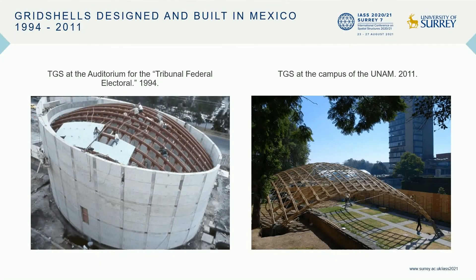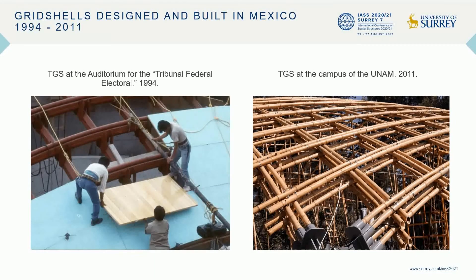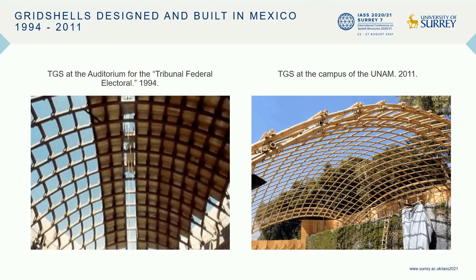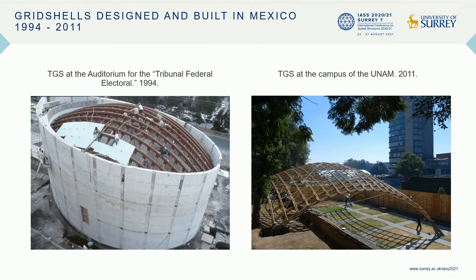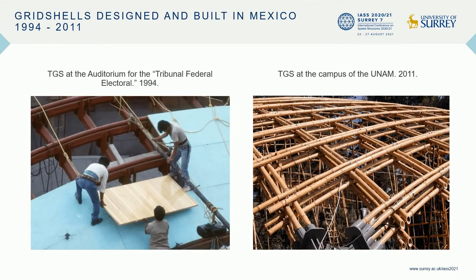On the left side, we can see the translation grid shell at the Auditorium for the Tribunal Federal Electoral, 1994. It has a covered area of 400 square meters and was built with continuous steel rods covered with timber and reinforced concrete. On the right side, we can see the translation grid shell at the campus of the University of Mexico, built in 2011. The design is from Andres Casares and myself. It has a covered area of 200 square meters and was built with continuous bamboo rods covered with a textile membrane.